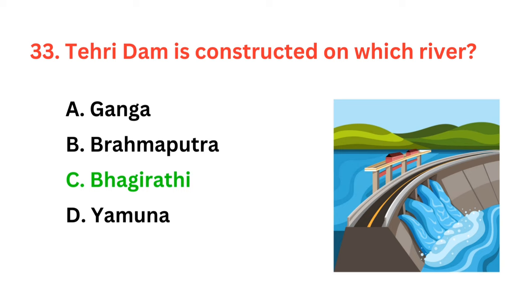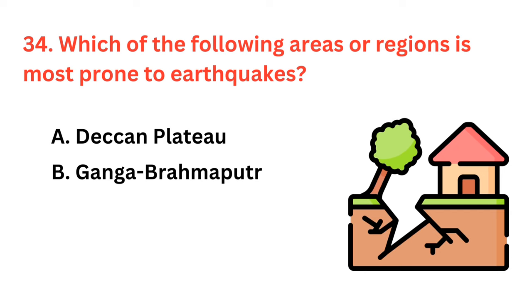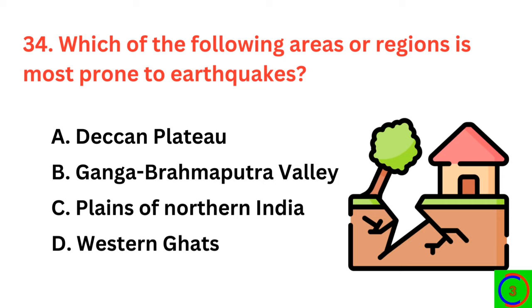Which of the following areas or regions is most prone to earthquakes? The correct answer is option B: Ganga-Brahmaputra Valley.